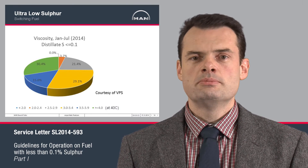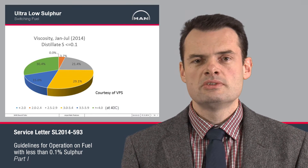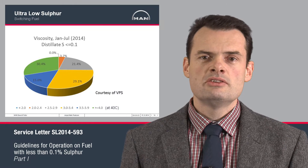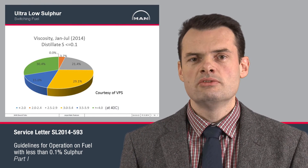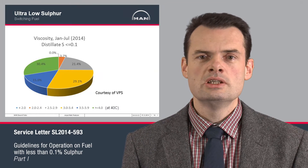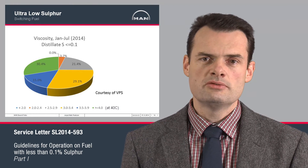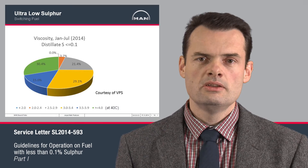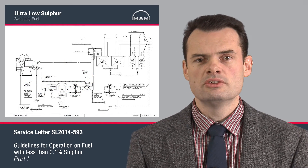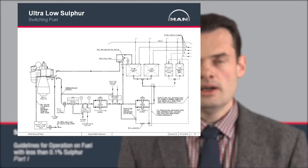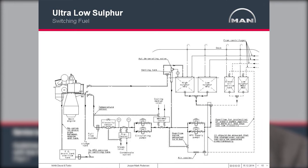Looking at distillates bunkered for ships, they come in different viscosity variations, but luckily the predominant part of bunkers received for ships are usually with viscosities higher than 2.5 centi-stoke. This makes it much easier to maintain an adequate viscosity on the main engine — higher than 2 centi-stoke, preferably 3 centi-stoke — and this can be done by using fuel coolers operated with central cooling water.